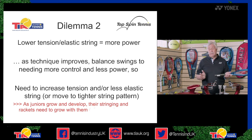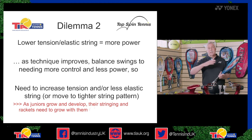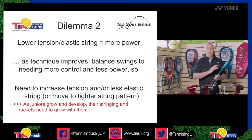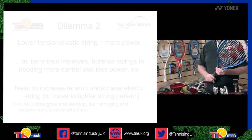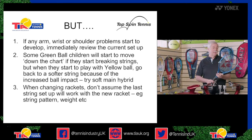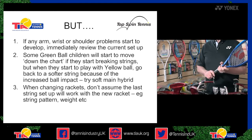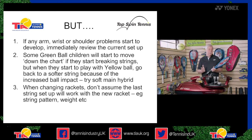I would recommend that as your child grows, you stay in regular contact with your stringer and racket sport specialist — they'll help you manage the change of strings as the child develops. Really, the strings should grow with the child. With juniors, if any arm, wrist, or shoulder problems begin to develop after you've changed the string, you need to review the current setup. It may be a technique issue or a range of other reasons, but check the string setup as that may be one of the factors.